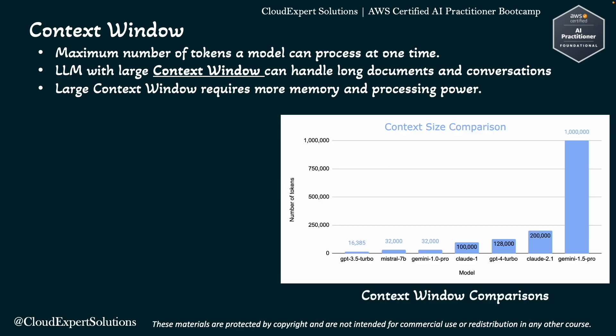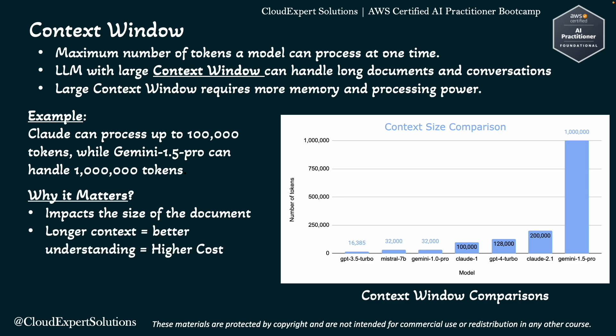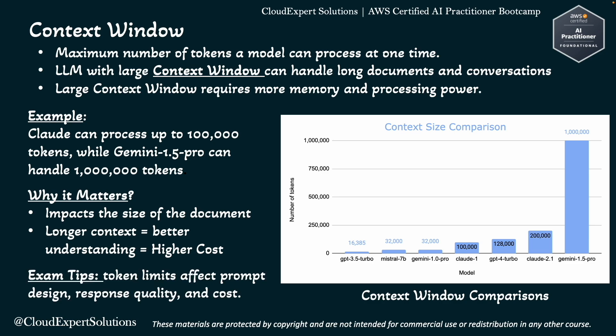Here is a diagram representing token size based on available models. For example, Claude can process up to 100K tokens, while Gemini 1.5 Pro can handle 1 million tokens at a time. This matters because it impacts the size of the document you can process — a longer context means better understanding, but the cost will be higher. If your prompt plus response exceeds the window size, you might get a truncated or irrelevant result. Remember: token limits affect prompt design, response quality, and cost.